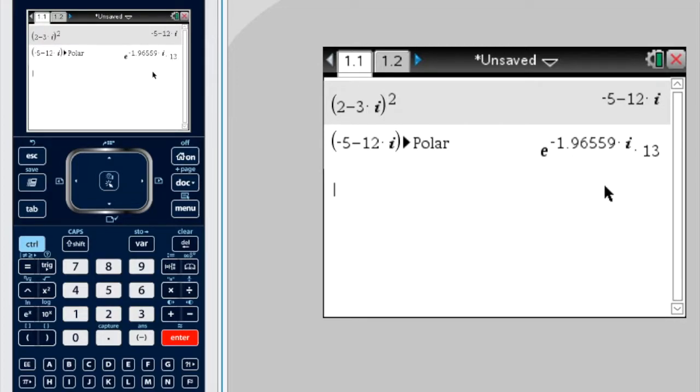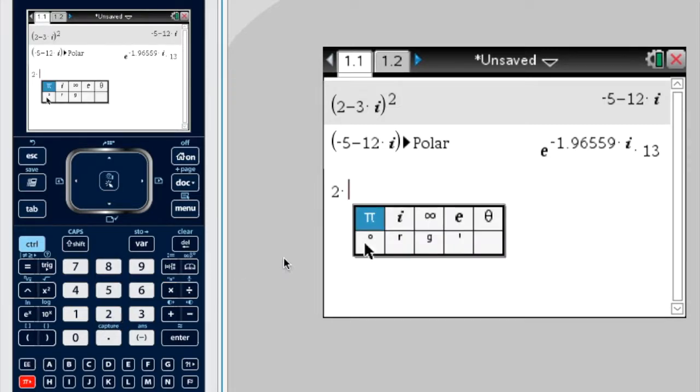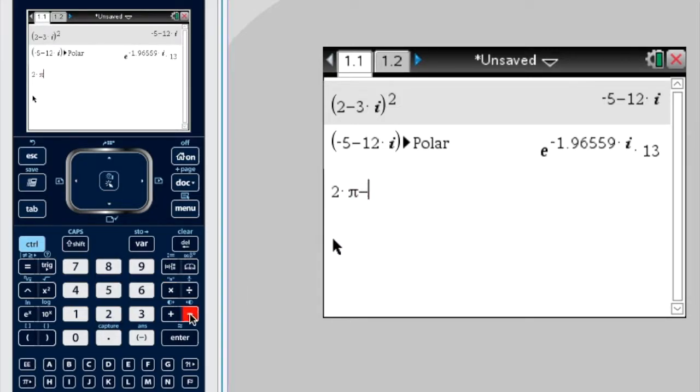Now, which is interesting, because we generally don't express our angles as negative. So if I were you, I would find the equivalent positive angle between 0 and 360. A whole circle is 2 pi, and I want to subtract that angle. So for instance, 2 times pi minus 1.96559, enter.